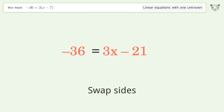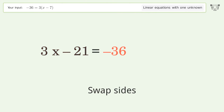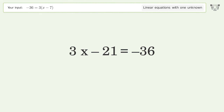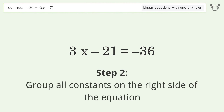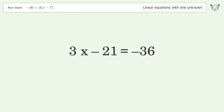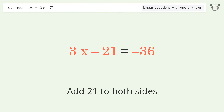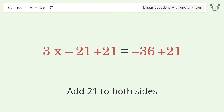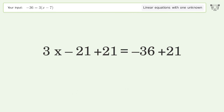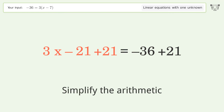Swap sides. Group all constants on the right side of the equation. Add 21 to both sides, then simplify the arithmetic.